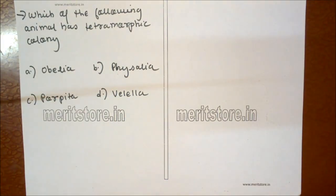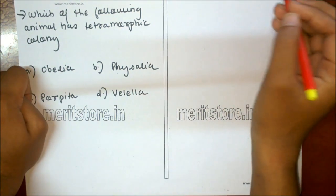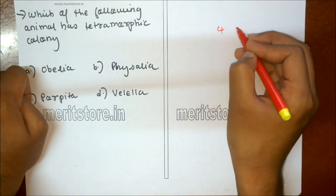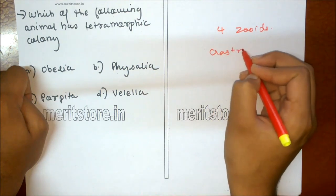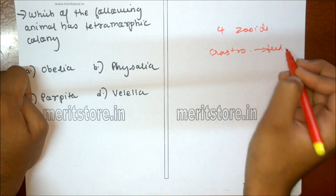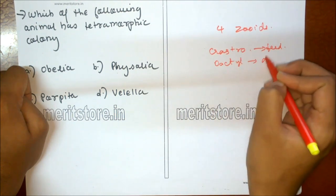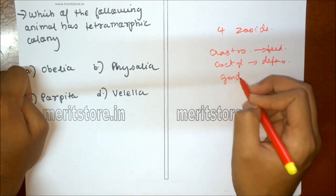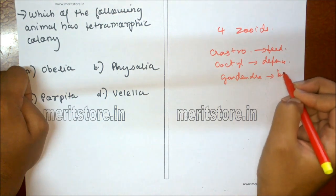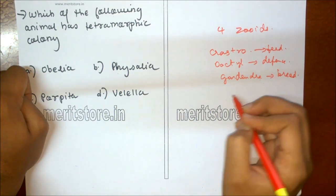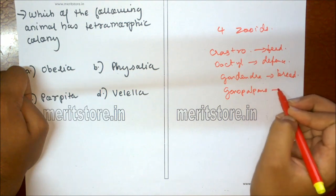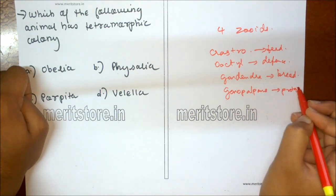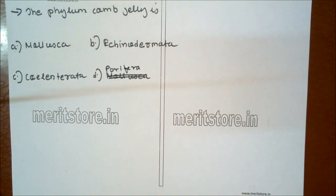The following animal has a tetramorphic colony: A Obelia, B Physalia, C Porpita, D Valella. Physalia colony is tetramorphic because it consists of four types of zooids: gastrozooids for feeding, dactylozooids for defense, gonodendra for breeding (male and female gonophores), and gonopalpons for protection. So option B is the correct answer.